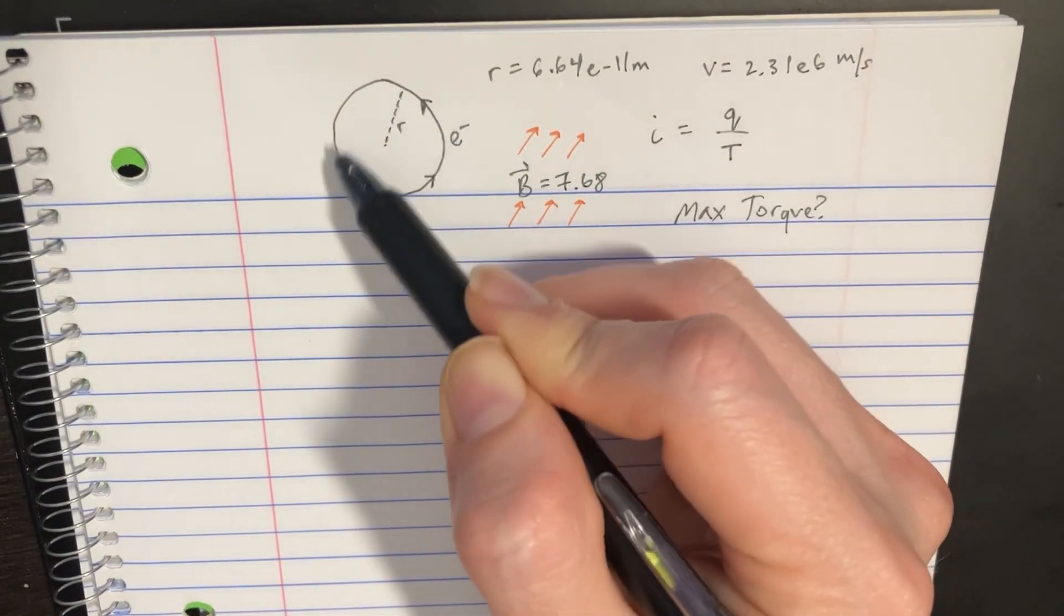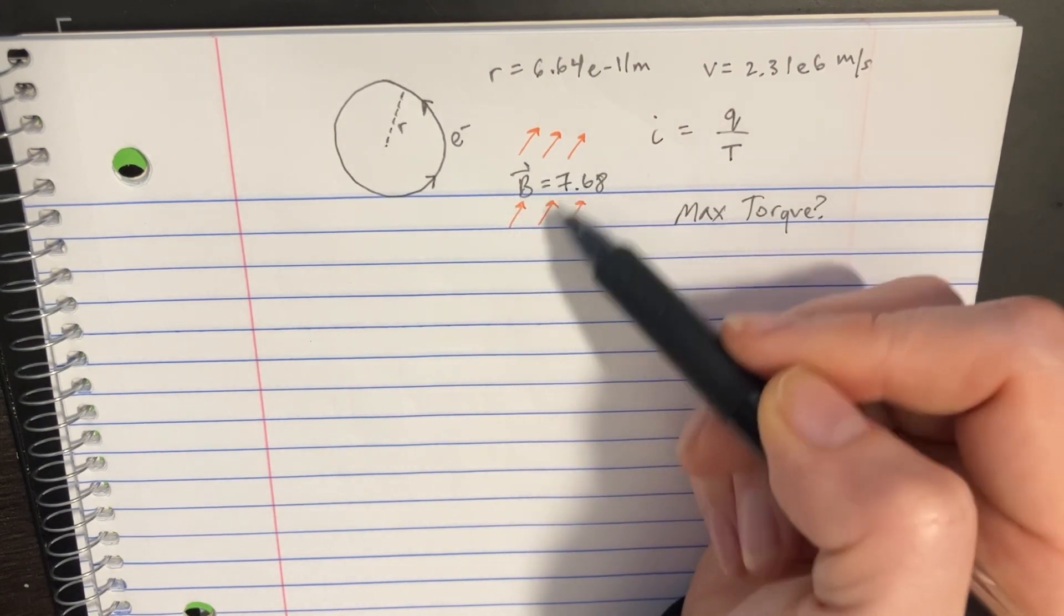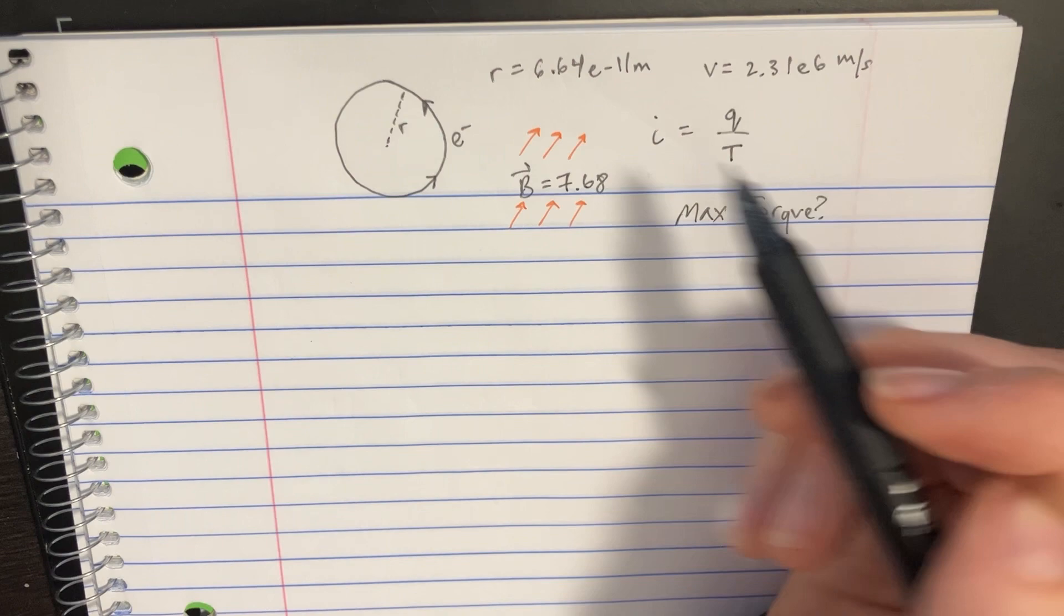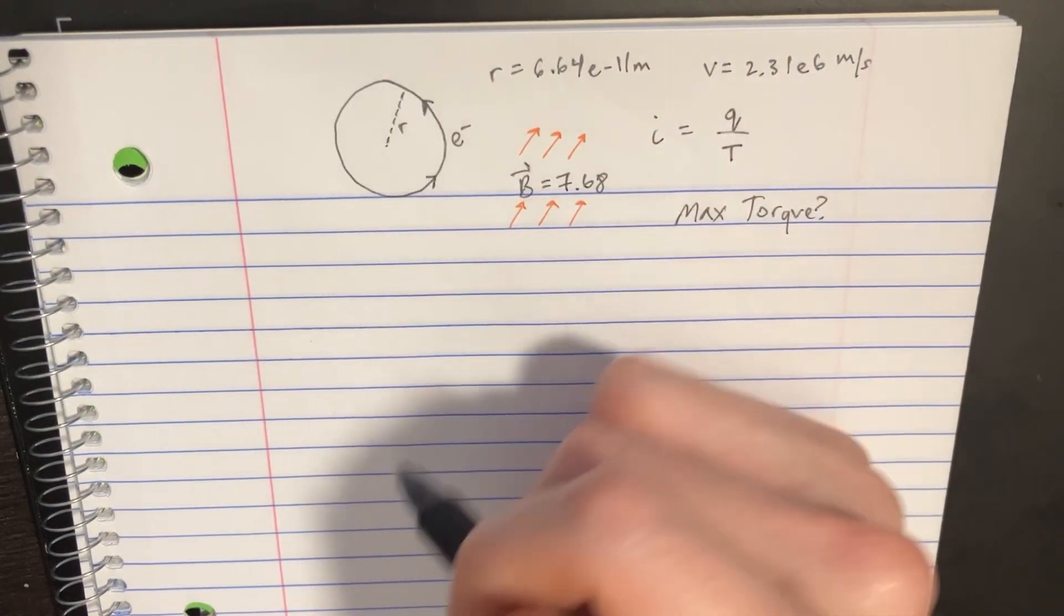In this problem, an electron is moving around in a circle in a magnetic field, and we're looking to figure out what the maximum torque would be with this magnetic field on the loop.